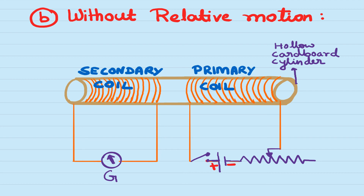Another method is by keeping the primary coil circuit closed and varying the resistance using a rheostat. The magnitude of current in the primary coil can be increased or decreased this way. When current is increased, the strength of the magnetic field due to the primary coil will be more; when current is decreased, the strength will be less. This creates a disturbed magnetic field around the primary coil, and any conductor placed in this disturbed magnetic field — in this case, the secondary coil — will have induced current produced in it.